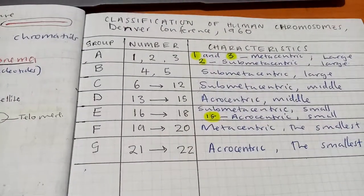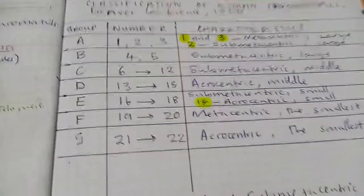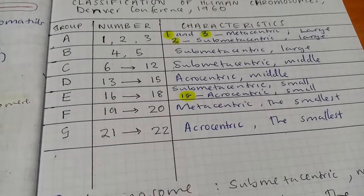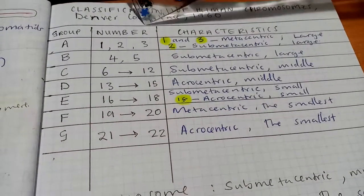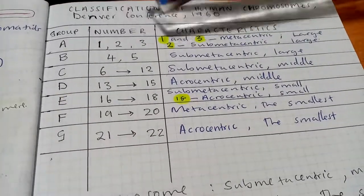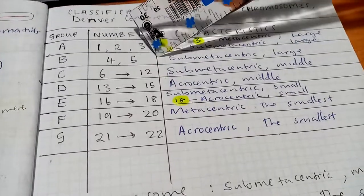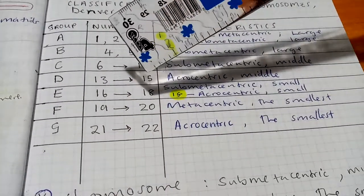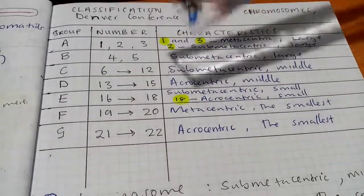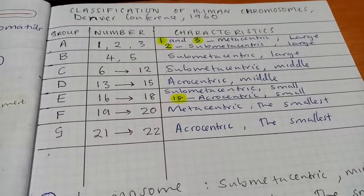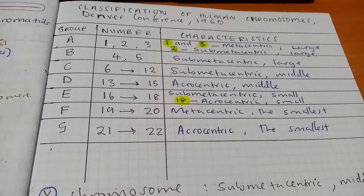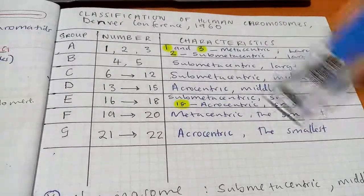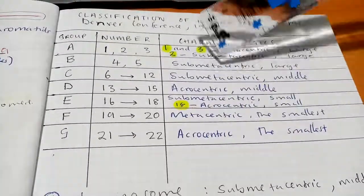We'll look at the classification of human chromosomes according to the Denver conference of 1960, where chromosomes are grouped into seven groups — A, B, C, D, E, F, G. Chromosomes 1, 2, 3 are Group A; 4 and 5 are Group B; 6 to 12 are Group C; 13 to 15 are Group D; 16 to 18 are Group E; 19 to 20 are Group F; and 21 to 22 are Group G. You can pause the video to study the characteristics of each group.